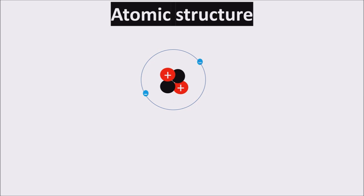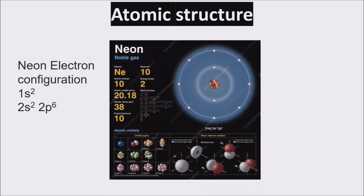For example, the electron configuration of a neon atom is 1s2, 2s2, 2p6, meaning that the 1s, 2s, and 2p subshells are occupied by 2, 2, and 6 electrons respectively. This means that the outer energy levels of shells 2s and 2p are fully occupied with 8 electrons, so this element has no tendency to bond with other elements.